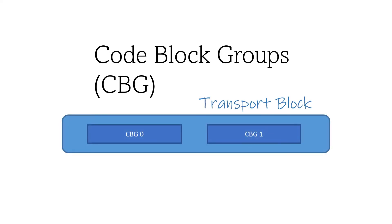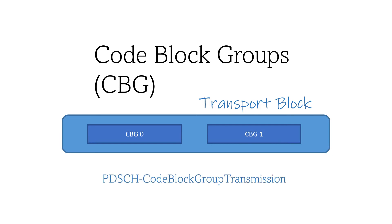Code Block Groups (CBG) is one of the key concepts in 5G HARQ. A transport block is split into multiple code block groups, and one CBG includes multiple code blocks. When retransmission is required, it can retransmit only a single code block group. This is called per-CBG retransmission and is configurable by a higher layer parameter called PDSCH Code Block Group Transmission; otherwise it generates one HARQ ACK per transport block.